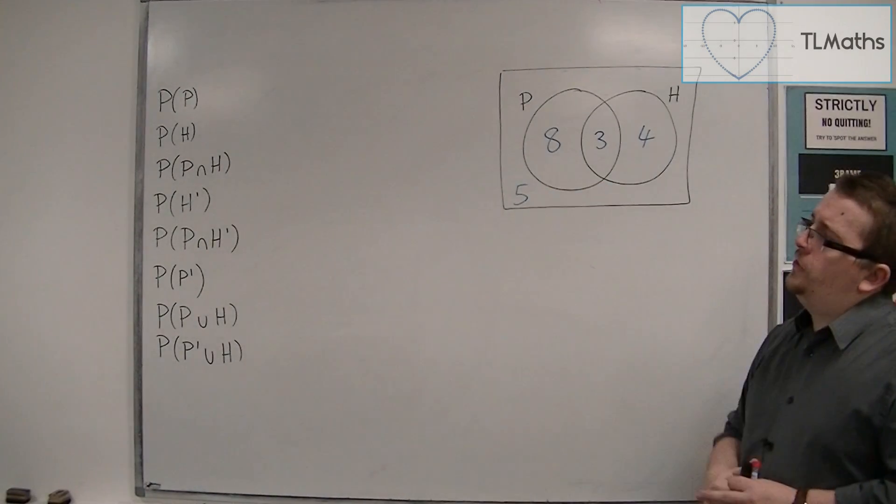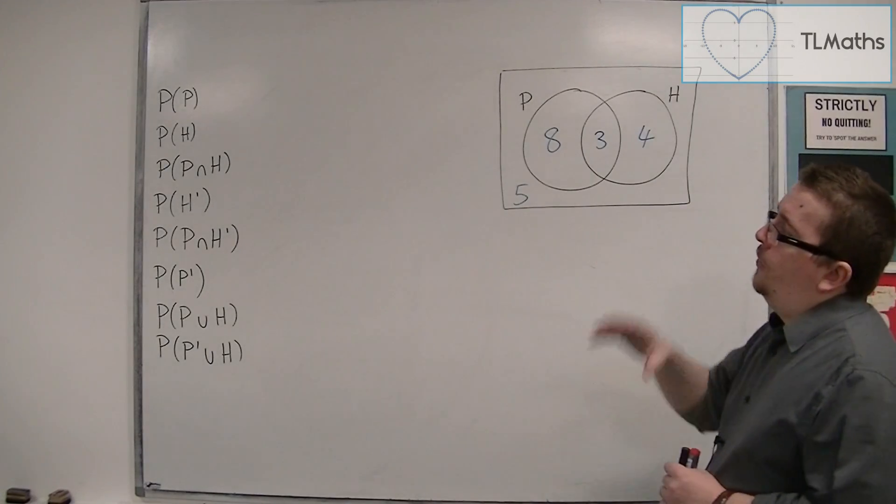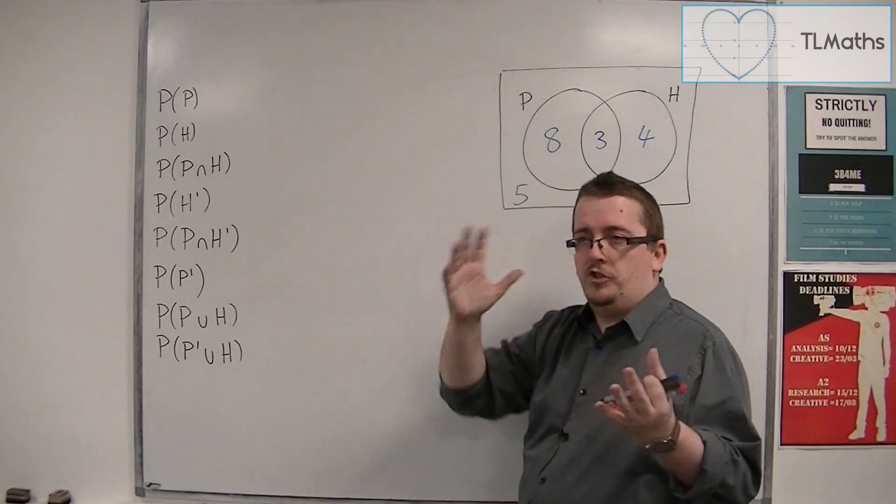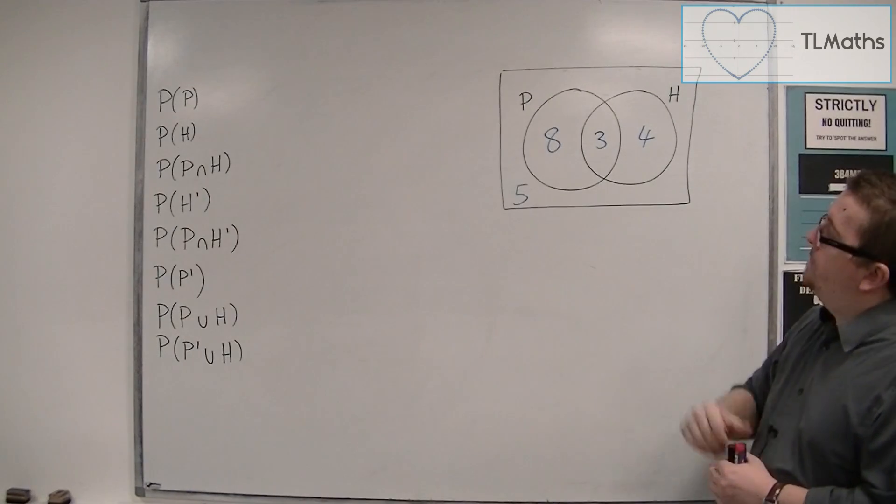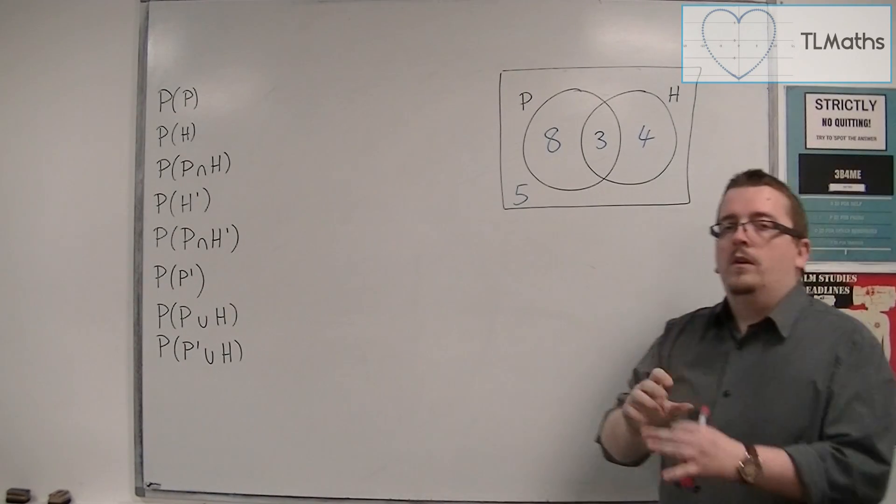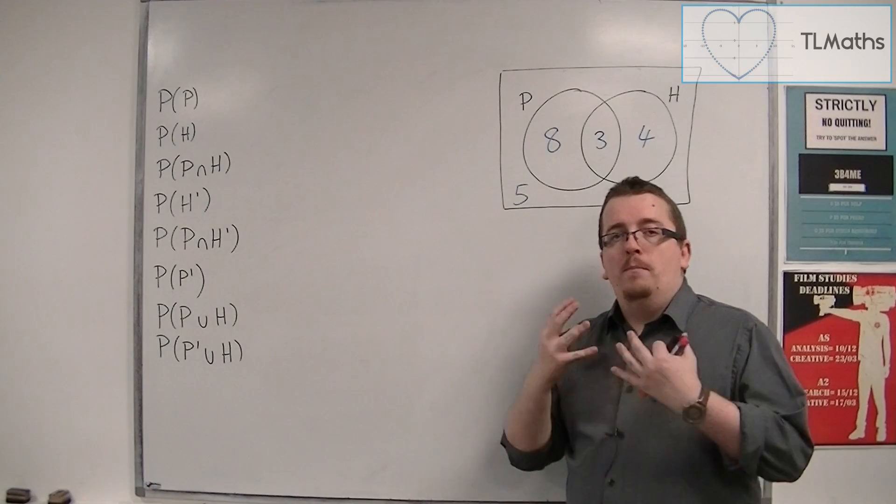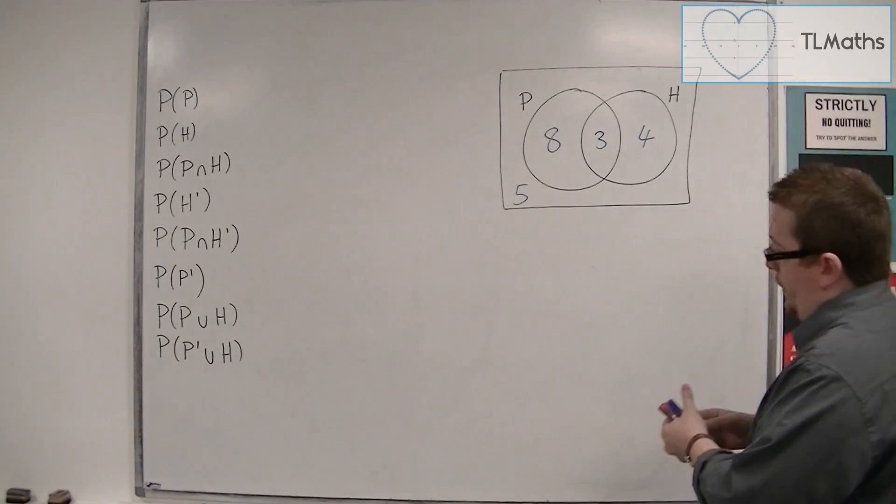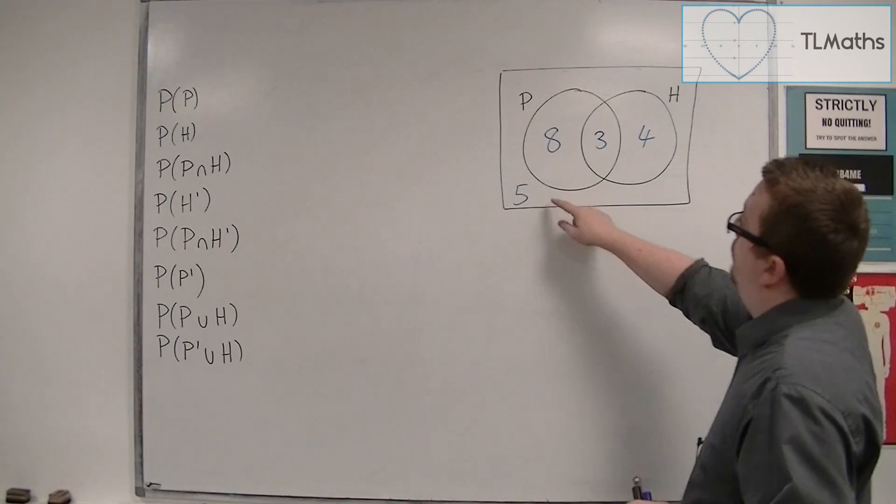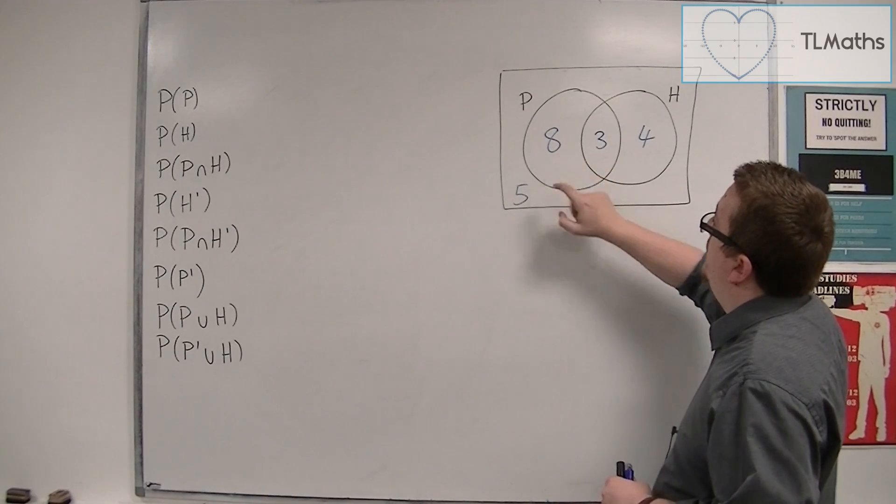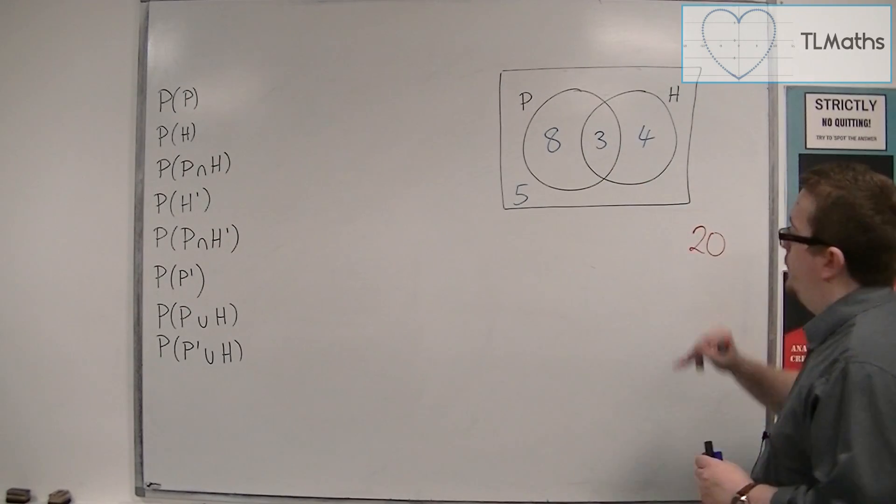So we're going to start off right at the top. Find the probability of a student studying physics. So I need to work out how many students there are in total to start off with. That would be useful. And I've got five, eight, so that's 13, 16, 20. So I've got 20 students.